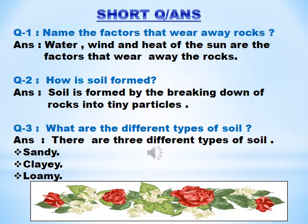Question number two. How is soil formed? Answer is: soil is formed by the breaking down of rocks into tiny particles. Question number three. What are the different types of soil? Answer is: there are three different types of soil — sandy, clay, and loamy. This is the end of the chapter.